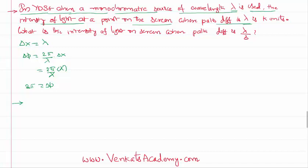What is going to be the resultant intensity? We know we have a formula: I resultant is 4I₀ cos²(φ/2). So substituting this value, 4I₀ cos²...